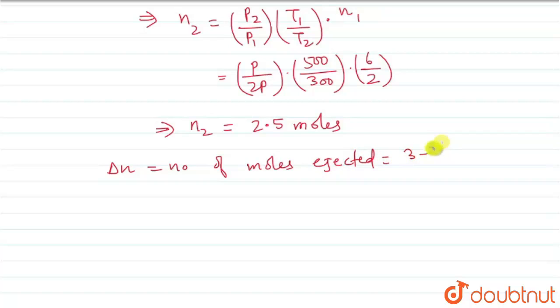3 minus 2.5, which gives us 0.5 moles. In other words, delta m (mass) equals delta n times molar mass, which is 0.5 × 2 = 1 gram.